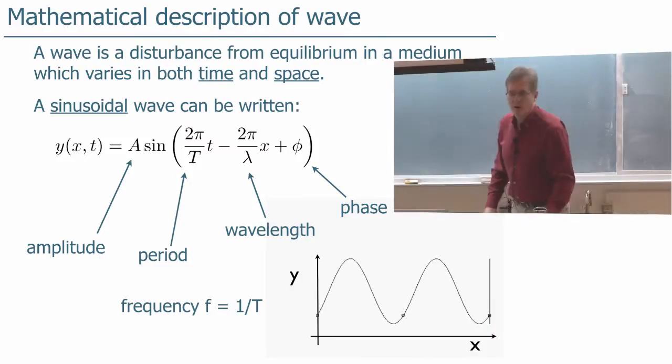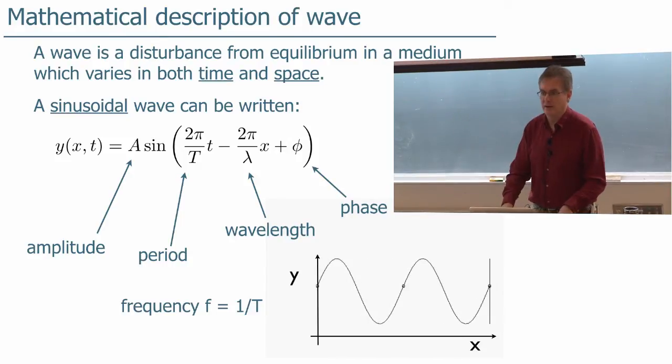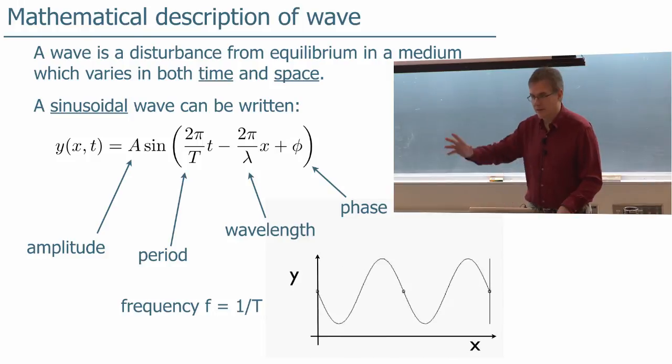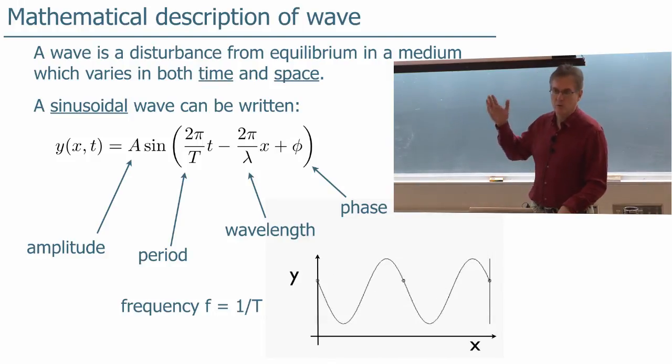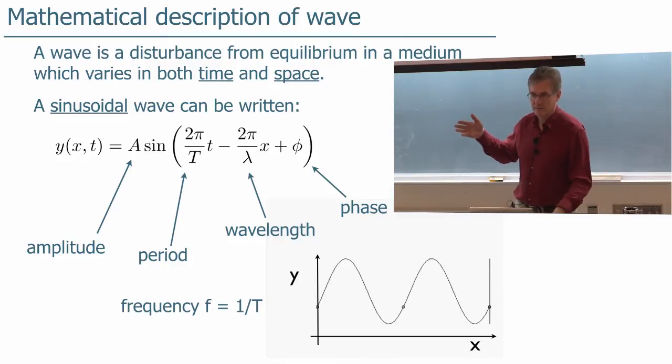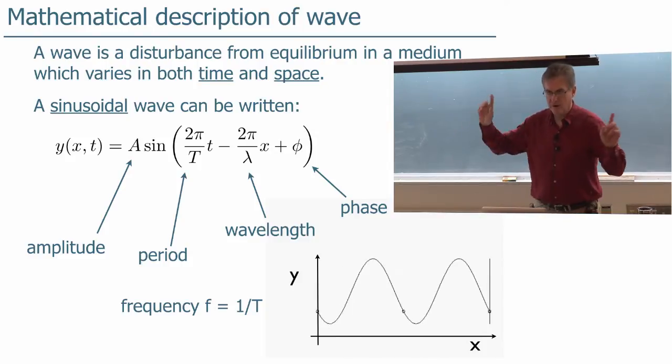Okay we can write down the one-dimensional description of a wave, a sinusoidal wave, and not all waves are sinusoidal. They can have different shapes, right? But a sinusoidal wave would be written y of x and t, position and time, is equal to the amplitude A times sine of this argument.